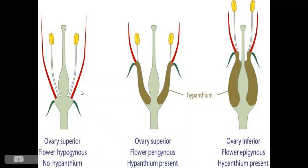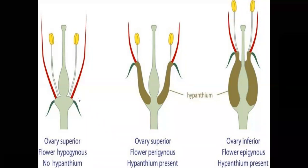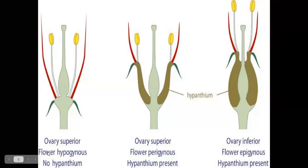The four major parts of a flower are calyx, corolla, androecium, and gynoecium. In hypogynous flowers, the superior part is the ovary, called the superior ovary. The superior ovary is present in hypogynous flowers.